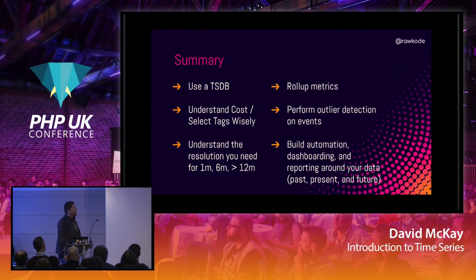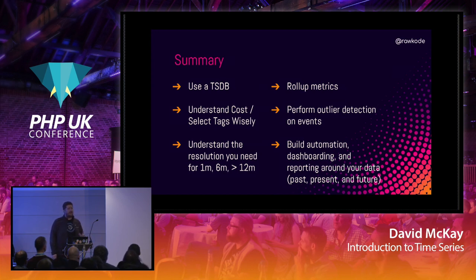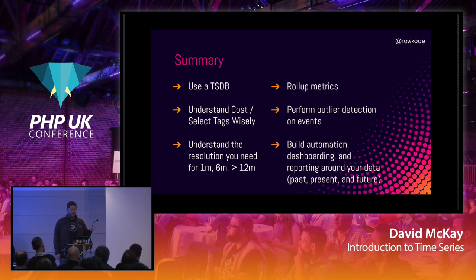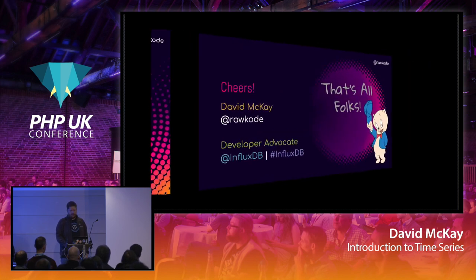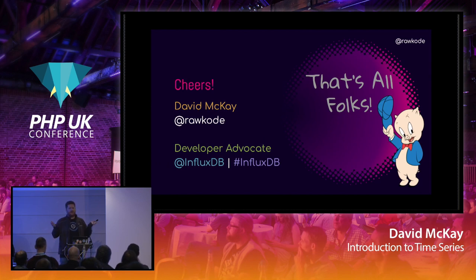In summary: please use a TSDB — do not use a general-purpose database for your time series data. Please roll up and down-sample your data as much as possible; it's very expensive to store billions of points and you have to plan your down-sampling appropriately. Run outlier and anomaly detection on your events. And build as much tooling, dashboarding, and automation as possible with this data — there's no point in storing it if it's not being consumed and used to your advantage. Thank you very much and I hope you're interested in time series data.